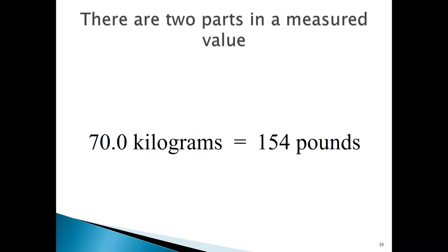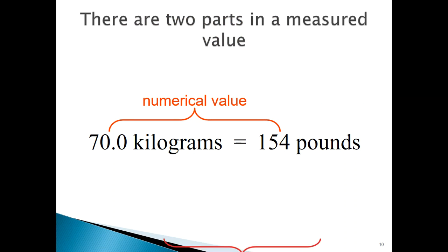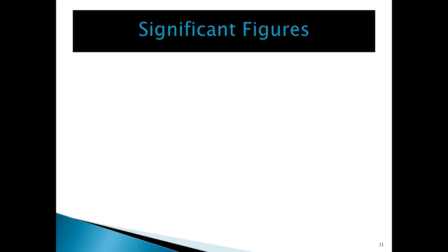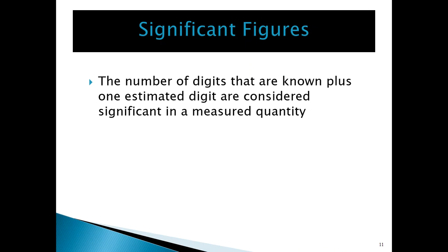There are two parts to any measured value. You have the numerical part, which is basically the quantitative value, and then you have the units. It is totally meaningless to mention one without the other. With any measured value, you have to determine what are known as the significant figures — those digits that we are certain about in a measured value, plus one estimated digit that we are not certain about. Every measured value has a finite number of significant figures.